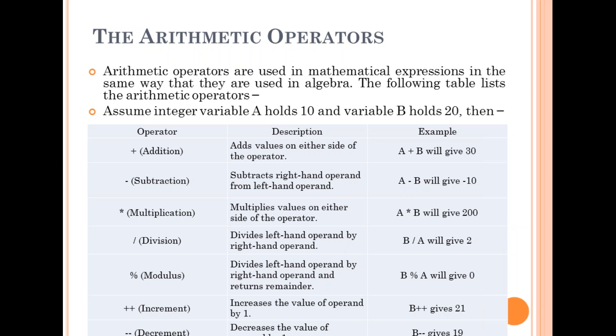Arithmetic operators are used in mathematical expressions in the same way that they are used in algebra. The following table lists the arithmetic operators. Assume integer variable A holds 10 and B holds 20. Then 10 plus 20 will give 30. Plus operator addition adds values on either side of the operator. Minus subtraction, 10 minus 20 will give us minus 10. Subtracts right-hand operand from left-hand operand.